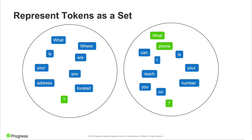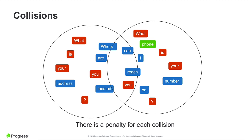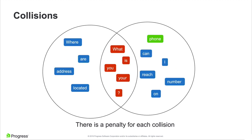The next step of this process is identifying words and tokens that are colliding between the two sets. By looking at these two sets, we can identify the following collision: we have 'what', 'is', 'your', 'you', and a question mark in both sets. If we bring those two sets together, on the left-hand side we have tokens for the address where 'where', 'are', 'address', and 'located' are specific to the address Q&A only. On the right-hand side, we have 'phone', 'can', 'I', 'reach', 'number', and 'on' — tokens specific to the phone Q&A only — while 'what', 'is', 'you', 'your', and a question mark are tokens in common between the two sets.